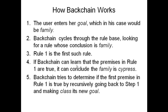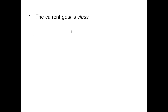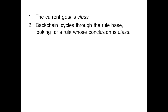So backchain tries to determine if the premises are true. It first tries to determine if the first premise in rule one is true by recursively going back to step one and making 'class' its new goal. Backchain is a recursive algorithm. So now our goal is class, and we're back at step one.